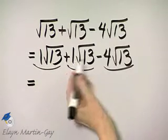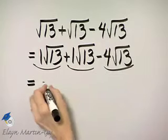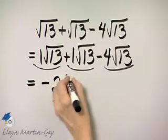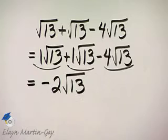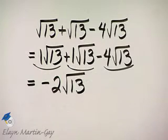1 plus 1 is 2. 2 minus 4 is negative 2 and then it's square root of 13. So here I have simplified negative 2 square root of 13.